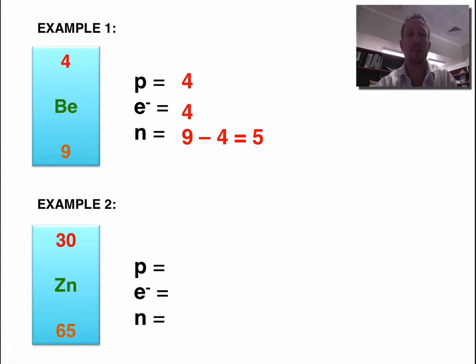Okay, so let's look at example two. The number of protons, that's the top number, 30. The number of electrons, also the top number, 30. The number of neutrons is 65 minus 30, which should equal 35 neutrons. Did you get that right? Well done.